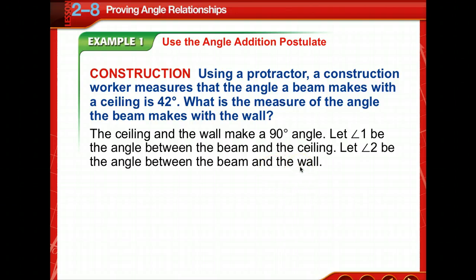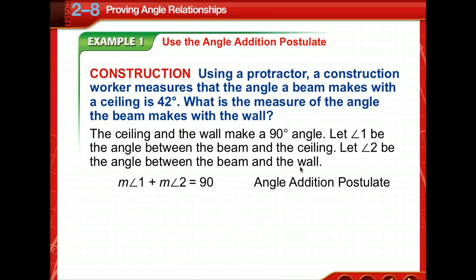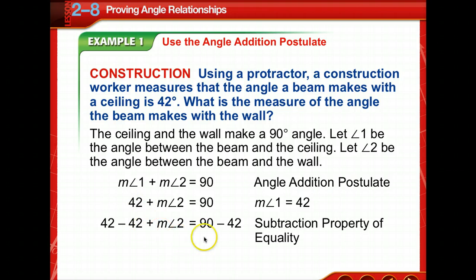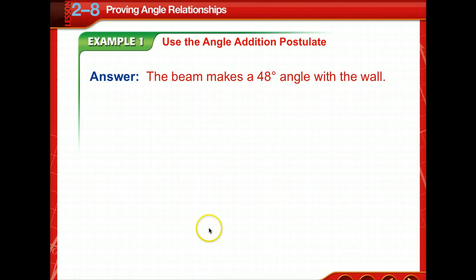It might help to stop and draw that. We know that the two angles together make 90 degrees, using the angle addition postulate. The measurement of angle one is 42 — we're given that — so we substitute it in and subtract 42 from both sides. The measurement of angle two is equal to 48, so the beam makes a 48-degree angle with the wall.